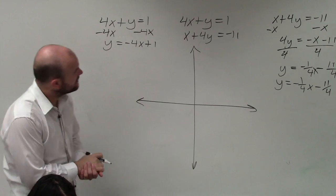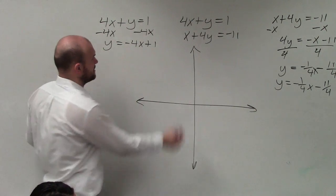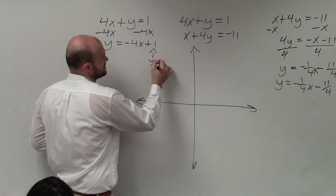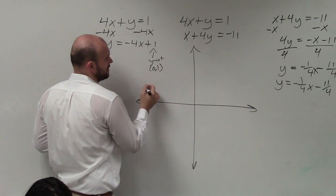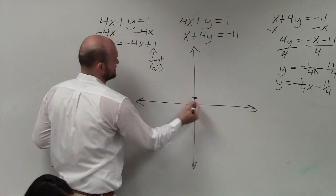All right, so now let's go and graph these individually. So the first one I'm going to graph is, remember, this is your y-intercept. Now remember, your y-intercept has a coordinate point of 0 comma 1. So I go up 1, and I make a nice big point.